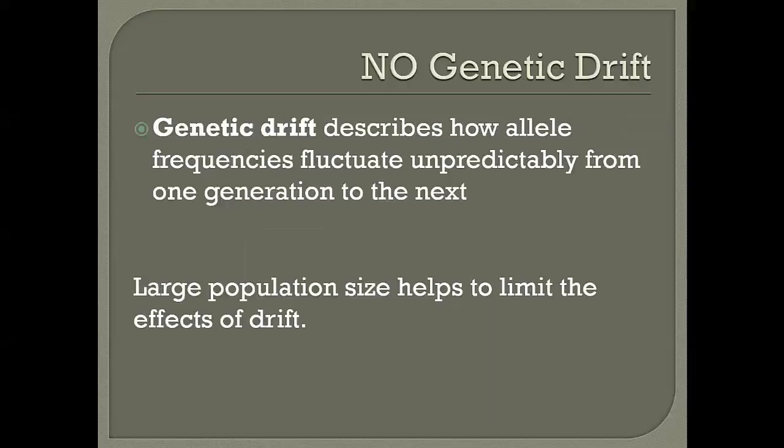Genetic drift is how allele frequencies fluctuate unpredictably from one generation to the next — it's random. The best way to prevent genetic drift is to have a large population — a big sample size — so that randomly breeding different individuals doesn't cause one allele to become more common over another.